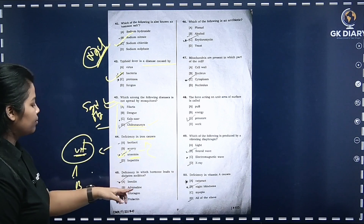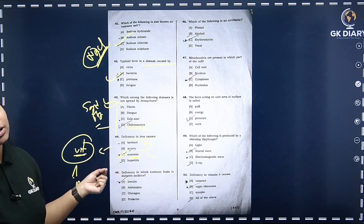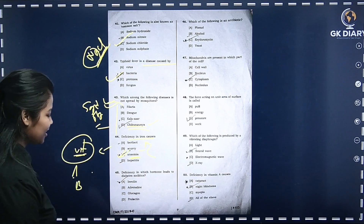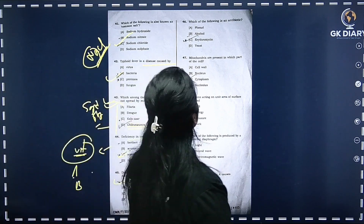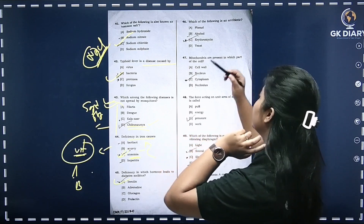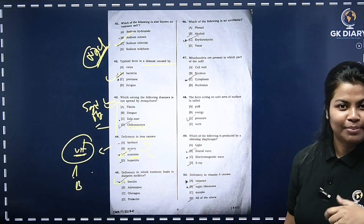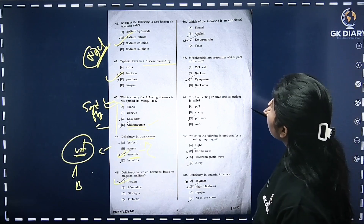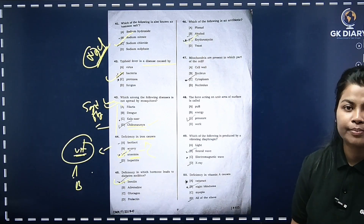Deficiency in which hormone leads to diabetes mellitus? The answer is insulin. The correct option is insulin. Which of the following is an antibiotic? Phenol and alcohol are not antibiotics. Erythromycin is the correct antibiotic answer.